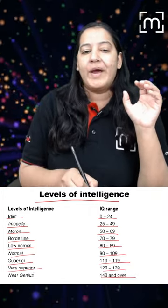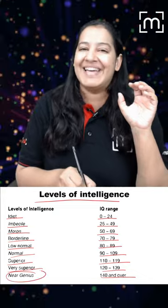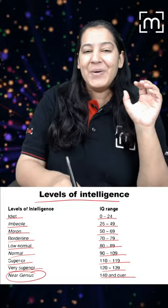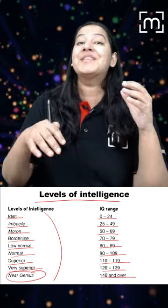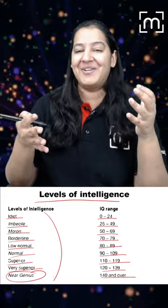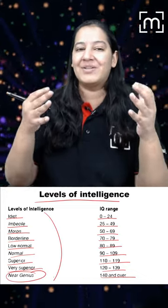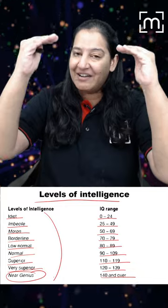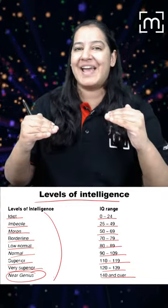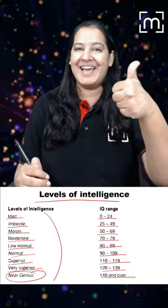And 140 above is near genius. So this is how IQ is calculated and based on that scale, we can divide into further categories. Thank you.